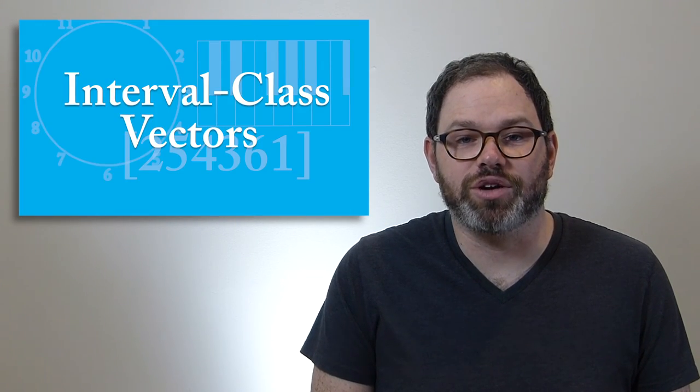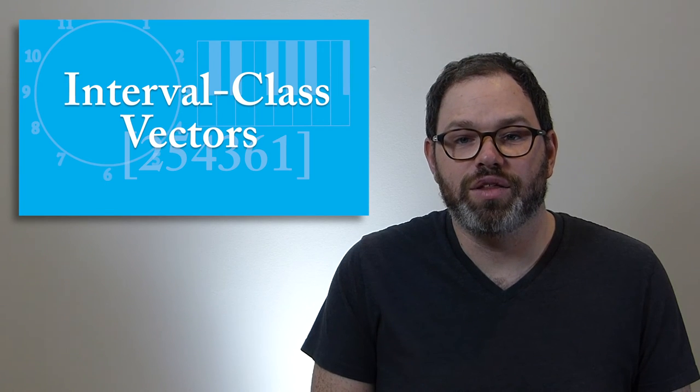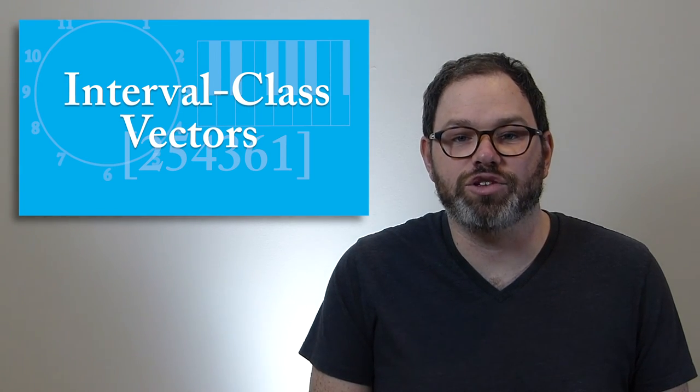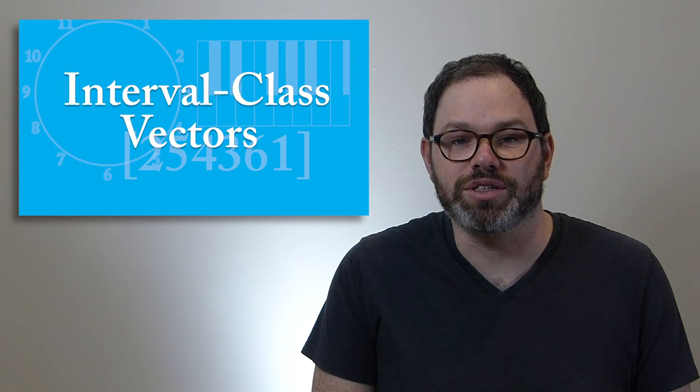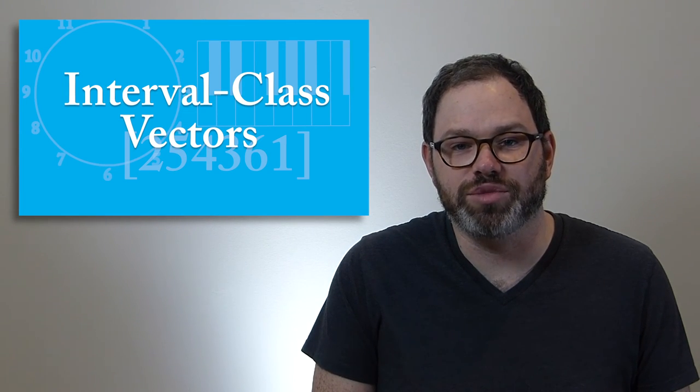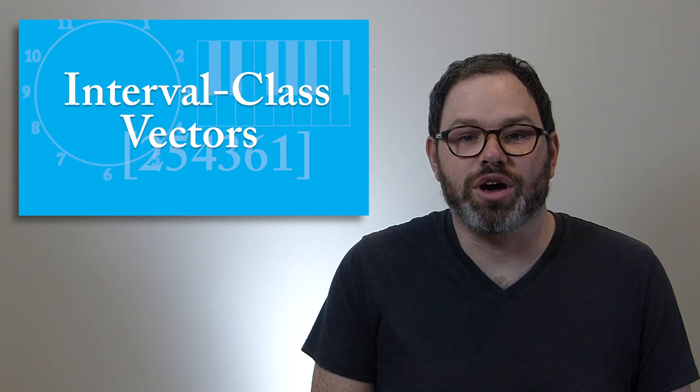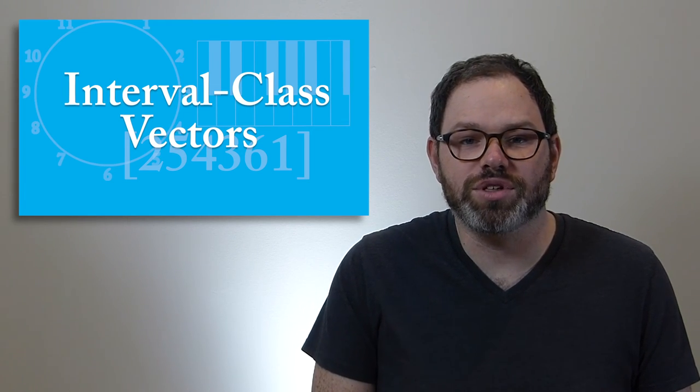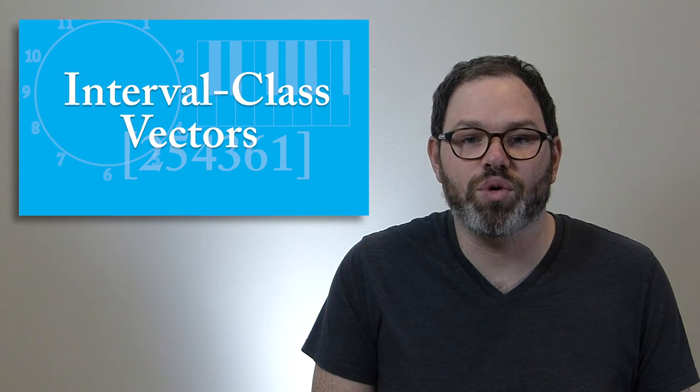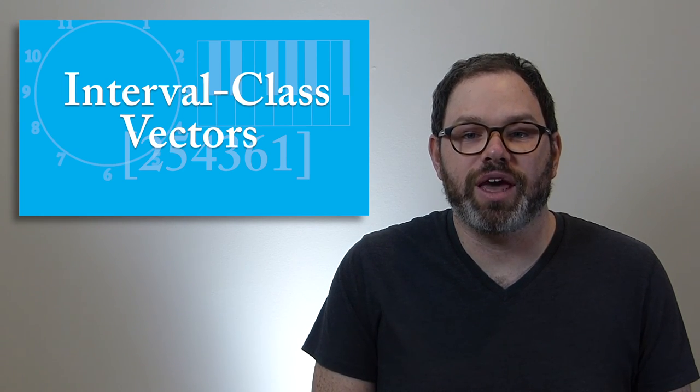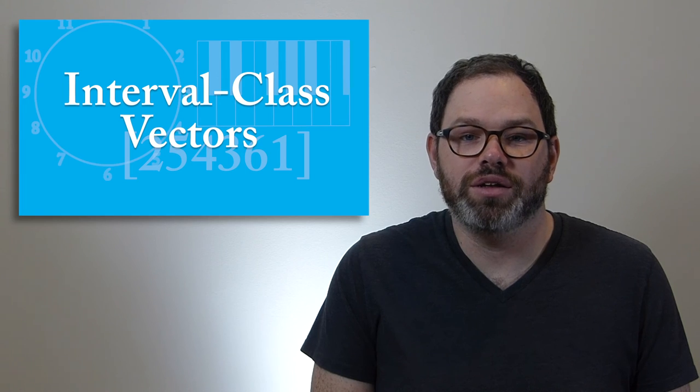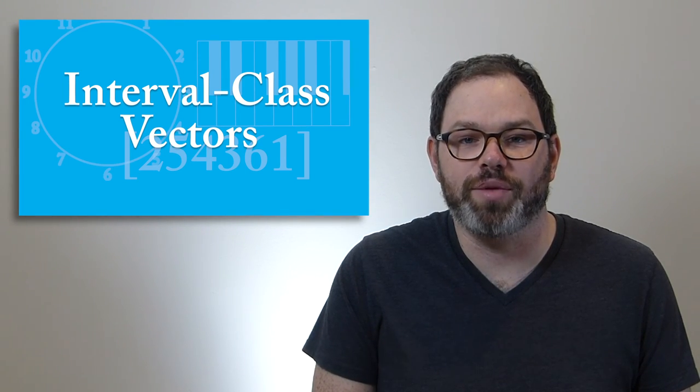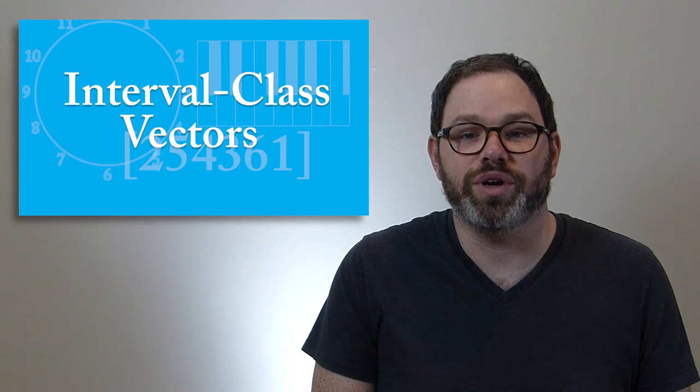The interval class vector allows us to see, quickly, the interval classes contained in a sonority. Although it doesn't say anything directly about the consonance and dissonance—those can be rather subjective terms anyway—it does allow us to comment on the overall sound of a sonority. And it affords us one way to compare two or more sonorities. In the case of the scalar collections we looked at, the interval class vector does a really good job of succinctly describing the tangible differences between each collection.